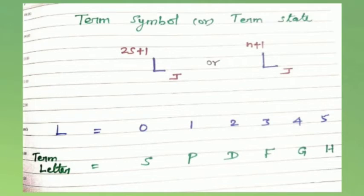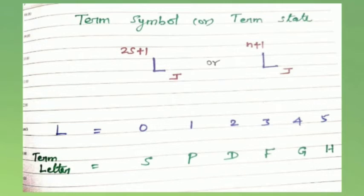The L values and their corresponding term letters are: L=0 is S, L=1 is P, L=2 is D, L=3 is F, L=4 is G, and L=5 is H.